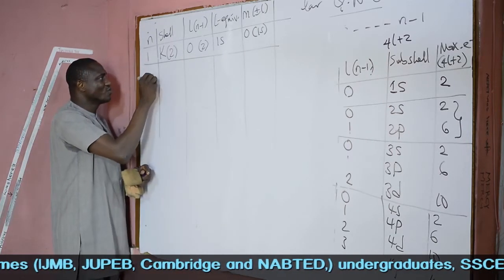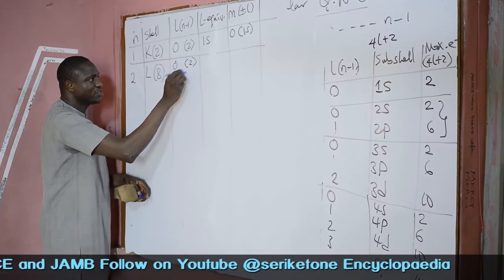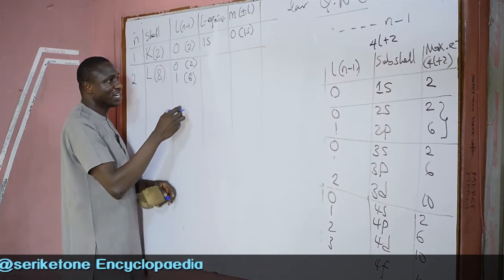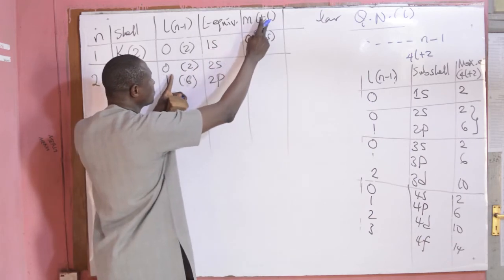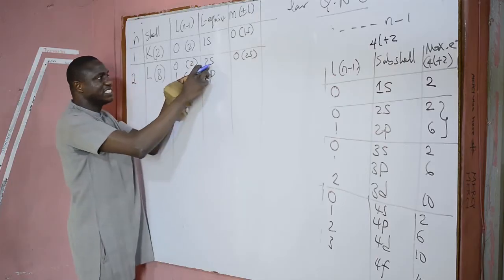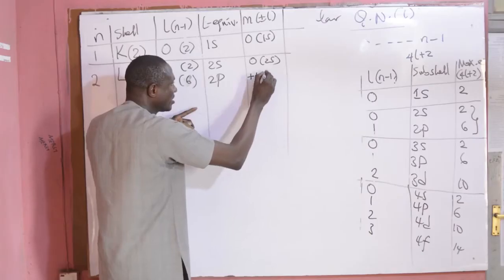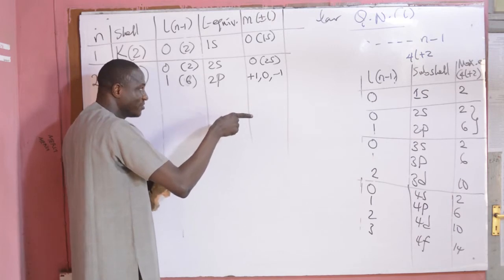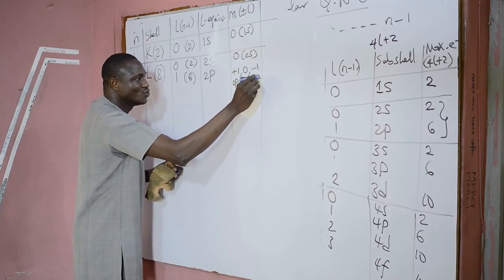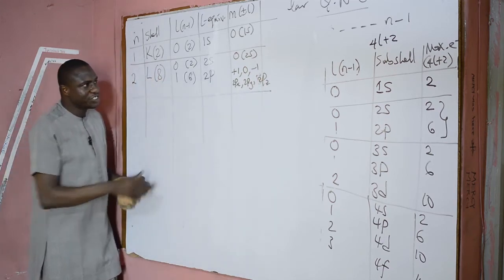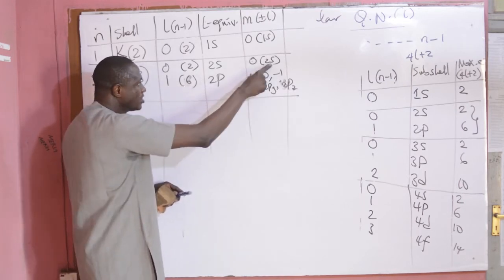When N=2, L shell, 8 electrons. 2−1=1, so L values are 0 and 1. 2S takes maximum 2 electrons, 2P takes maximum 6 electrons. How many orbitals? For 2S: ±0=0, which is one 2S orbital. For 2P: ±1 gives plus one, zero, minus one — three P orbitals, which are 2PX, 2PY, and 2PZ. If each takes maximum of 2 electrons, 2+2+2=6, equivalent to the number of electrons in that sub-shell. Adding the 2 from 2S gives a total of 8.